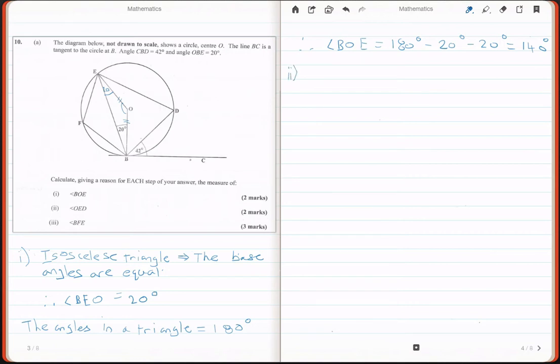Part two asks us to find the angle OED, that would be this angle here. In order to do that, we have to use another property. This is the property that involves the tangent and the chord.